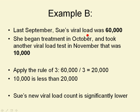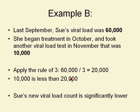Let's look at Example B. Last September, Sue's viral load was 60,000. She began treatment in October and took another viral load test in November that was 10,000. Applying the Rule of Three again: 60,000 divided by three is 20,000. And 10,000 is less than 20,000. So this does count as a statistically significant change — her new viral load count is significantly lower than the last one.